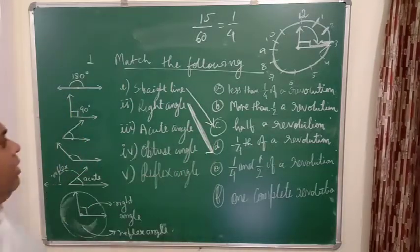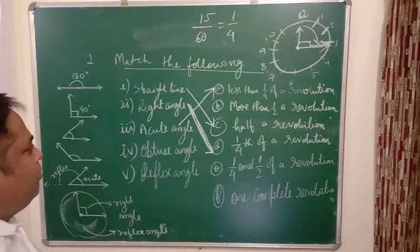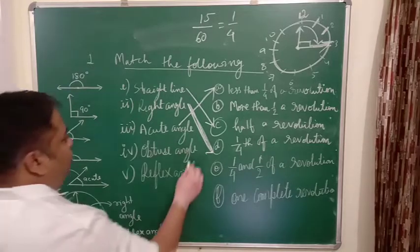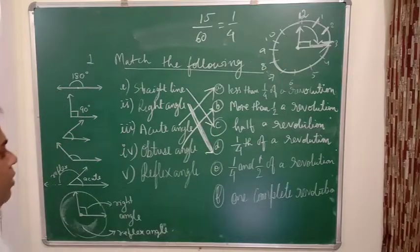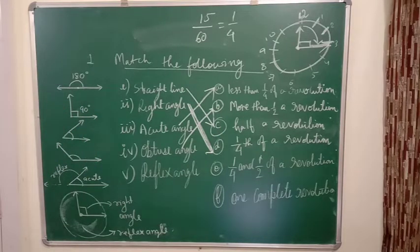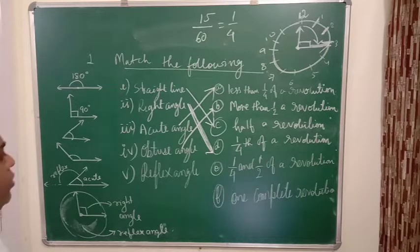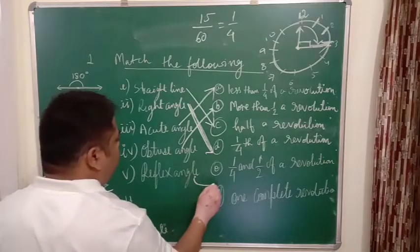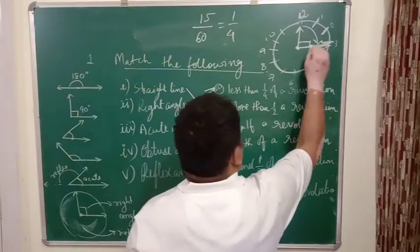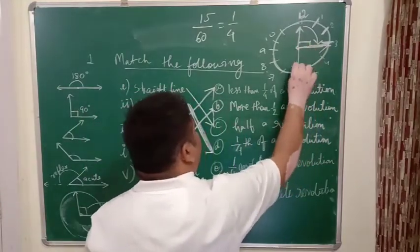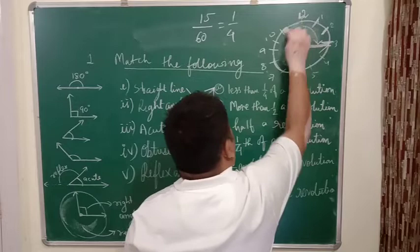Similarly, acute angle will be less than one-fourth of a revolution. Obtuse angle will be more than half revolution. And reflex angle will be between one-fourth and one-half of a revolution. Between one-fourth, that means this is one-fourth and this is one-half. So between this, whatever angle is there, this will be the reflex angle.